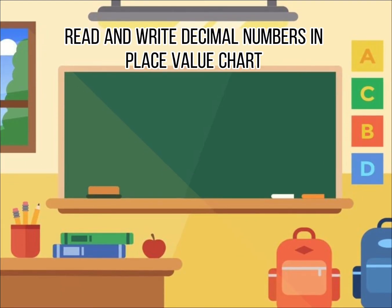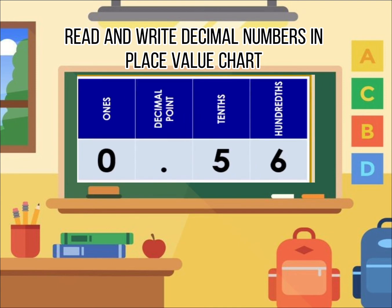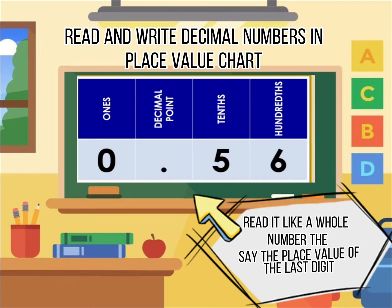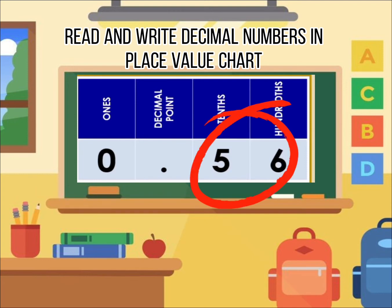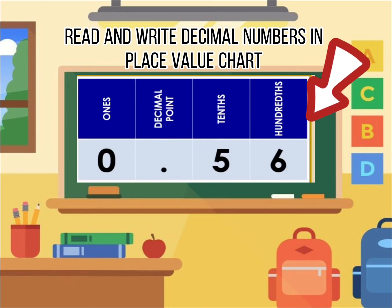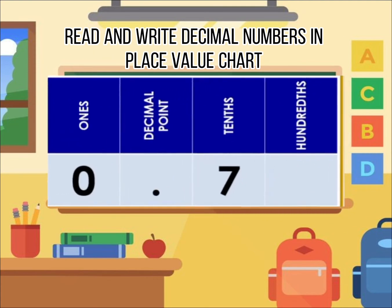Let's see how we read and write decimal numbers. We shall place each digit of a given decimal number in a place value chart. The first decimal is 0.56, read as fifty-six hundredths. When reading a decimal number, read it like a whole number, then say the place value of the last digit. For 0.56, the last digit is in the hundredths place, so it is read as fifty-six hundredths.